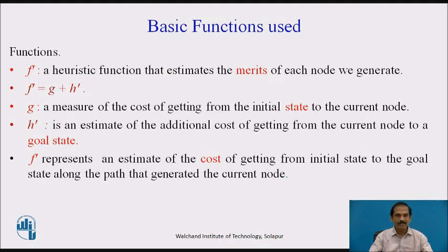The basic functions used for developing the A-star algorithm are: F', which is a heuristic function that estimates the merits of each node we generate. A heuristic is a technique to make the search efficient. F' equals G plus H', where G is a measure of the cost of getting from the initial state to the current node. H' is an estimate of the additional cost of getting from the current node to the goal state. And F' represents an estimate of the cost of getting from the initial state to the goal state along the path that is generating the current node.